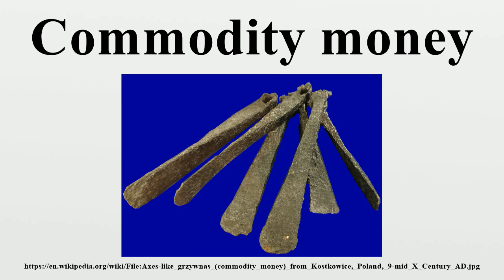Before market economies existed, people relied on tradition, top-down command, community cooperation, relations of reciprocity, and redistribution, substituted for market exchange. The city-states of Sumer developed a trade and market economy based originally on the commodity money of the shekel, which was a certain weight measure of barley, while the Babylonians and their city-state neighbors later developed the earliest system of economics using a metric of various commodities that was fixed in a legal code.